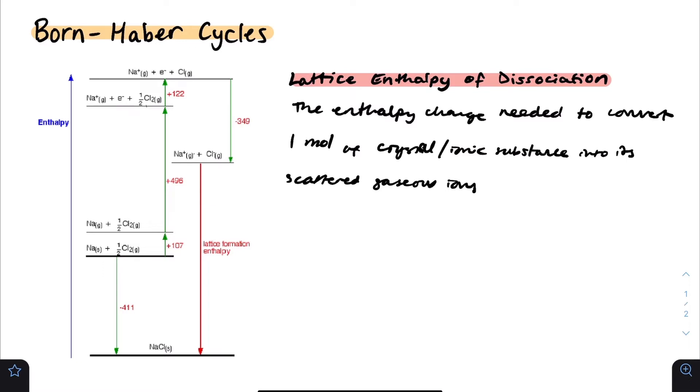If we take a look at this map on the left, we can see that at the bottom there is NaCl solid. We're trying to get it to become Na+ gas plus Cl- gas. The Na+ and Cl- represent the ions, whereas the gas form represents the scattered gaseous part. We're taking this solid substance, which has this fixed lattice shape, and converting it into these scattered ions.